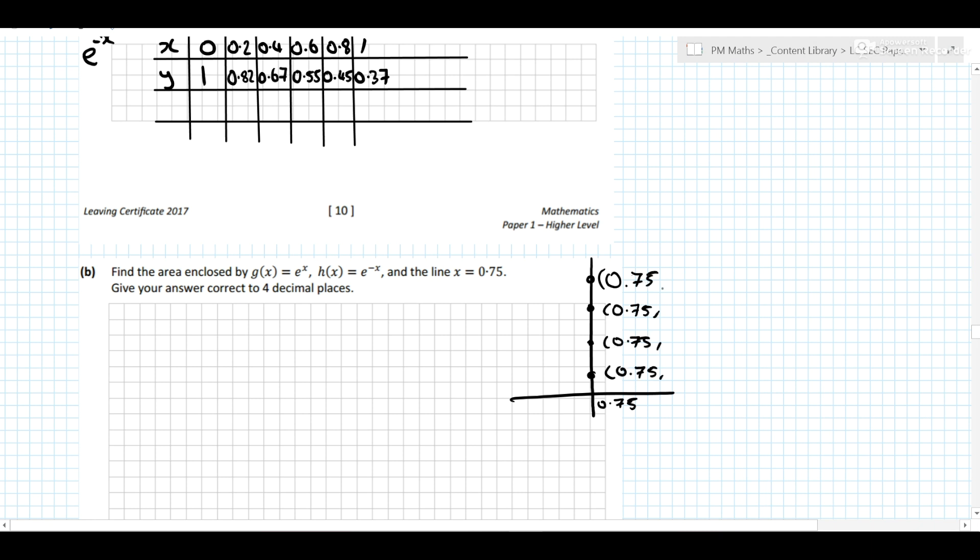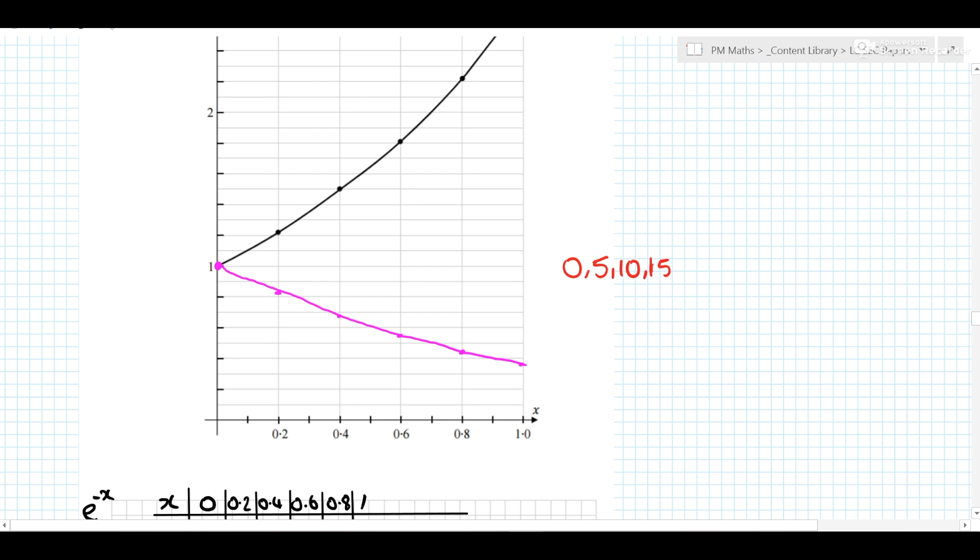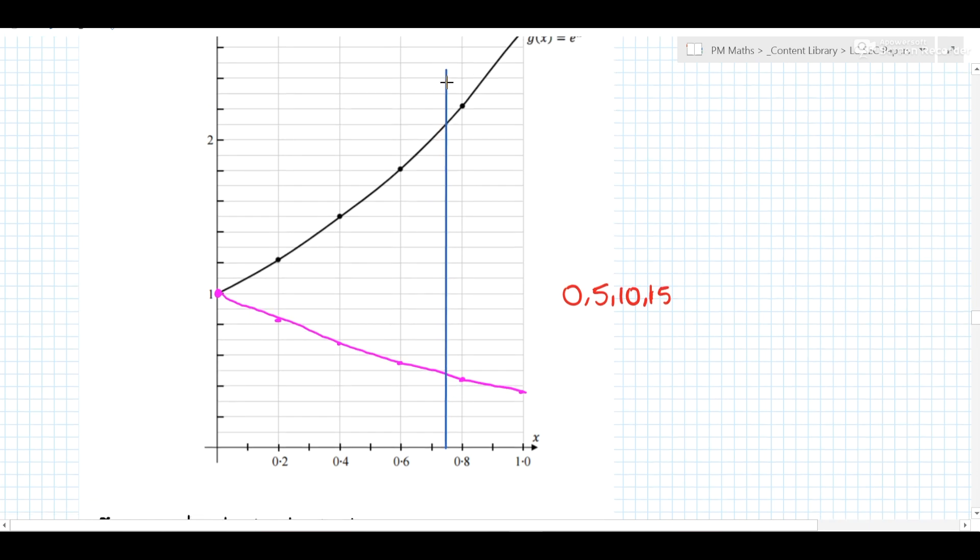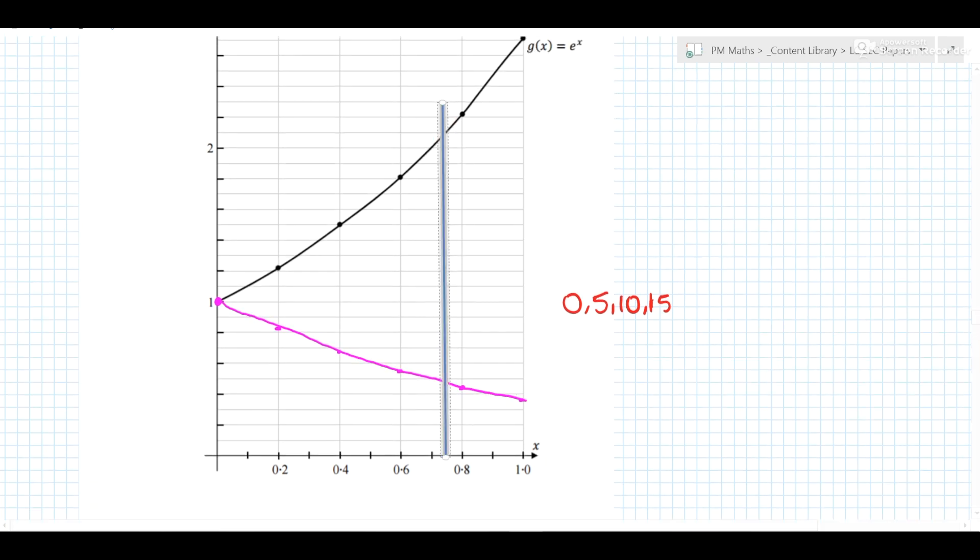but I know the defining characteristic of this line is that the x coordinates on that line is 0.75. So x = 0.75 is a vertical line. Where is 0.75? So I can draw it in just to help us out a little bit. Okay, so it's something like that, and I want that area there.